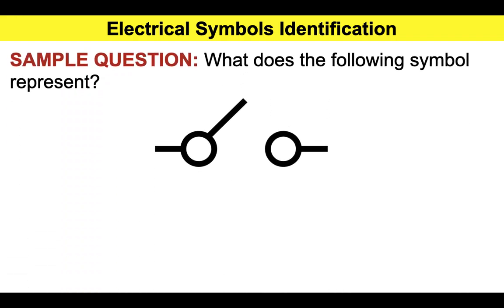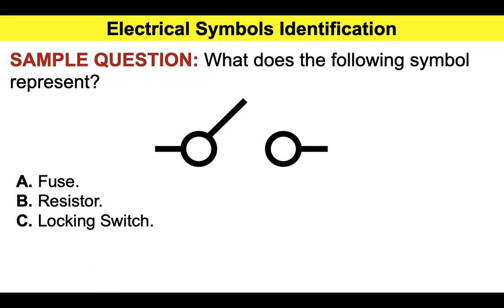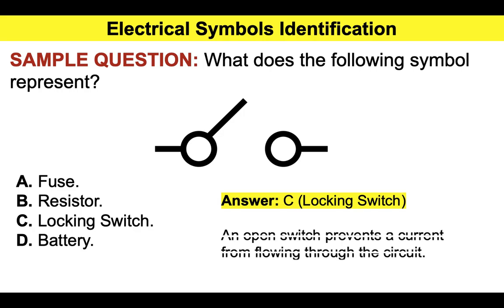Let's have a look at the second type of electrical aptitude test question: electrical symbols identification. The only way that you can truly answer these is if you do know what the symbols are. But if you apply a little bit of common sense, you can sometimes whittle the answer options down to one or two. For example: what does the following symbol represent? Options are A, a fuse; B, a resistor; C, a locking switch; or D, a battery. We've already seen what a battery looks like, so we can get rid of that. The correct answer is C, which is a locking switch. An open switch prevents the current from flowing through the circuit.